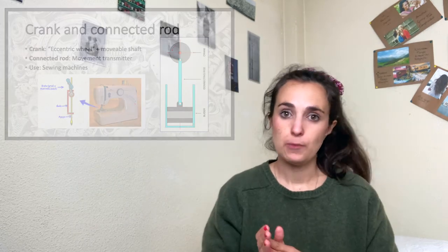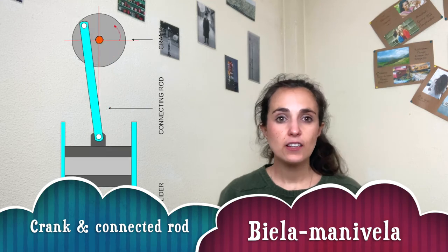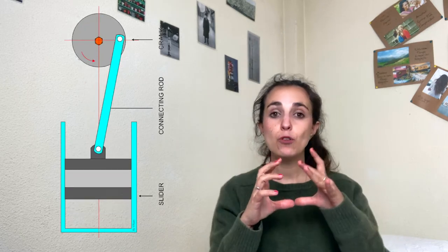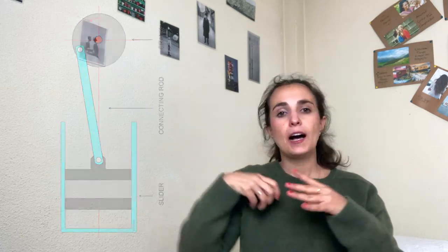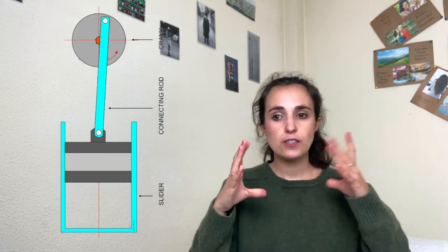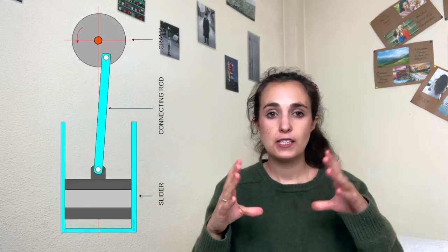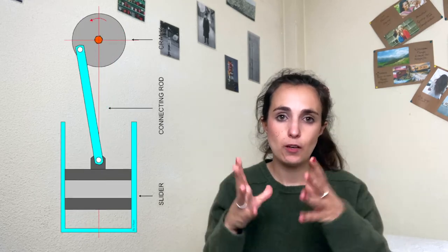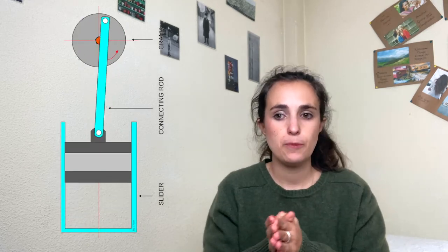Another example of mechanisms that transform rotary movement into linear movement, apart from cams, are cranks. In this case, it's a crank and a connecting rod. The crank is an eccentric wheel with a movable shaft, and the connecting rod is a bar that transmits the movement.